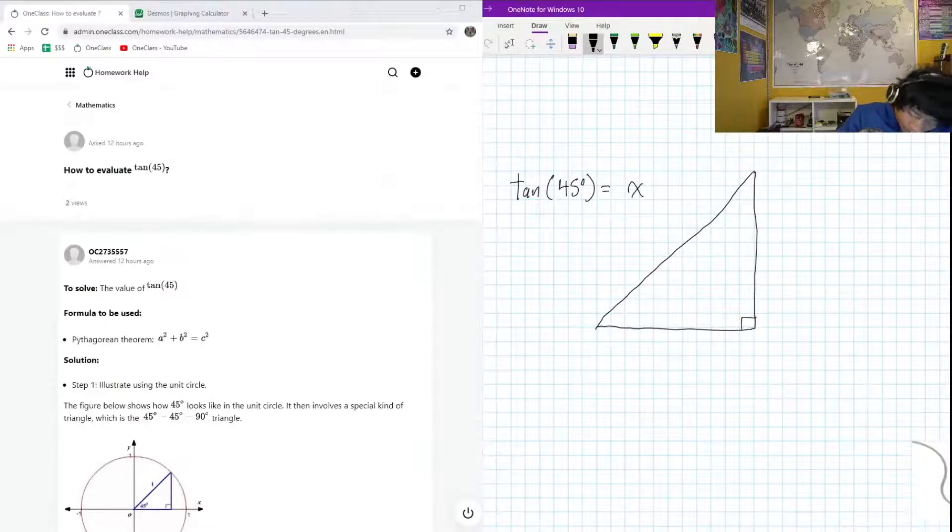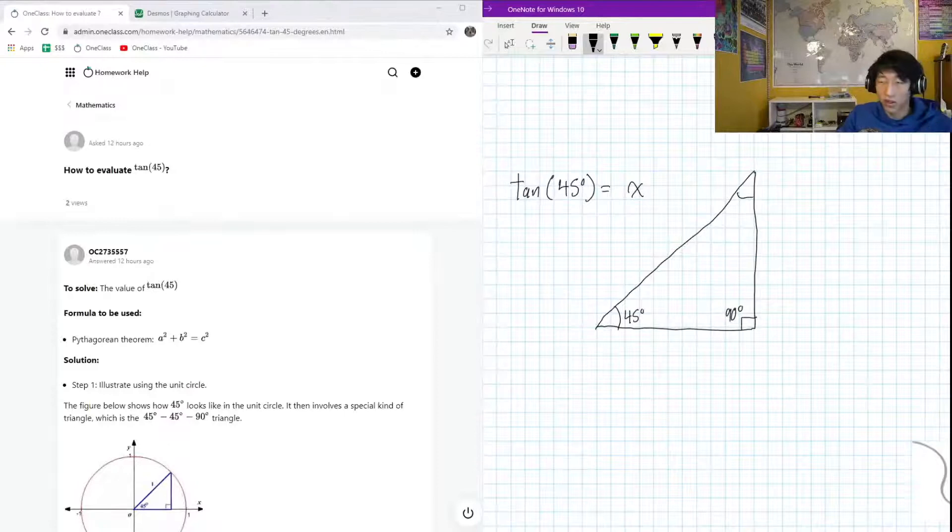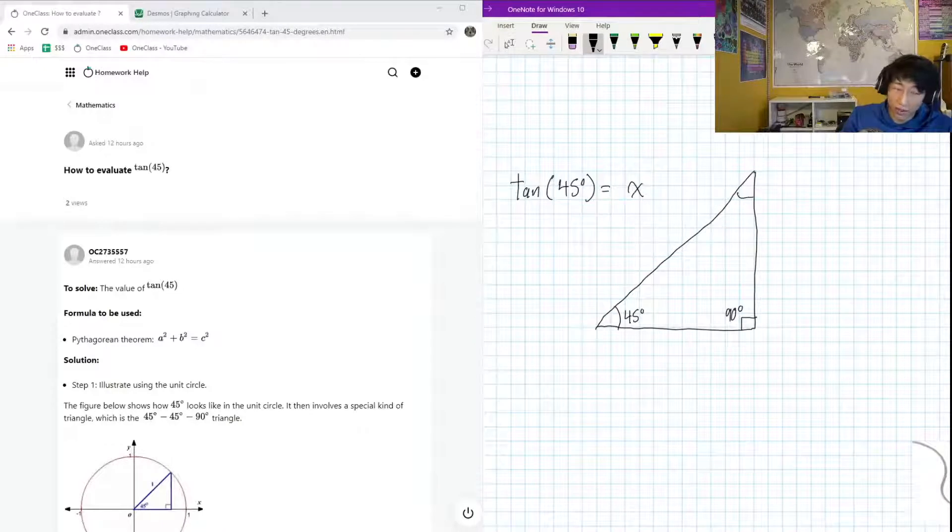So it's got to have one angle here that's 90 degrees, here we're going to have 45 degrees, and here, well the law of triangles, every triangle has a total internal angle sum of 180, so this is going to be 180 minus 90, that's 90, minus 45, that's going to be also 45, this has to be another 45 degree angle.